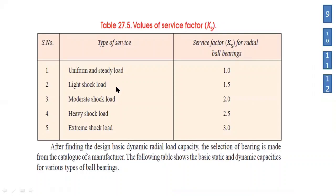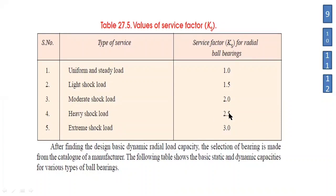For the design of rolling contact bearings, the service factors for radial ball bearings are as follows: for uniform and steady loads, ks equals 1; for light shock loads, ks equals 1.5; for moderate shock loads, ks equals 2.0; for heavy shock loads, ks equals 2.5; and for extreme shock loads, ks equals 3. These five values are very important for considering the service factor.